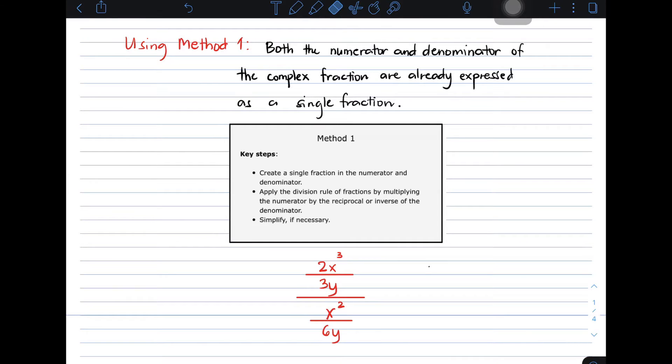In this given complex fraction, we have 2x cubed over 3y all over x squared over 6y. Both the numerator and denominator of the complex fraction are already expressed as a single fraction. So if you notice in the given complex fraction, if the numerator and denominator are not yet single fractions, you can make them single fractions, and then you will apply method number one.